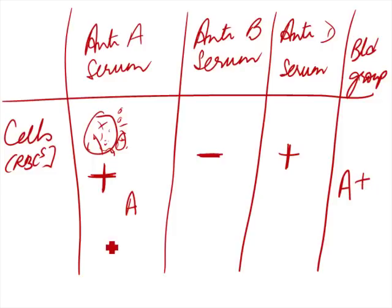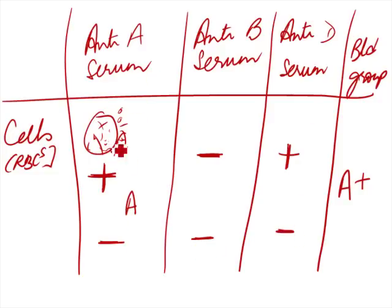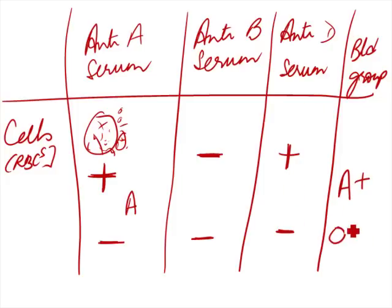If there was no agglutination with anti-A, no agglutination with anti-B, and no agglutination with anti-D, then you do not have antigen A, antigen B, or antigen D. When you have neither A nor B antigen, that is group O. When you also have no D antigen, that is O negative.